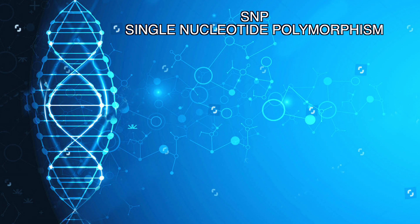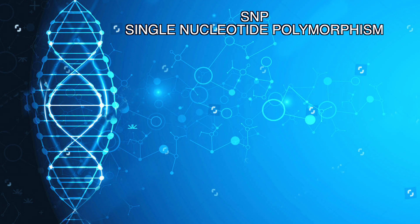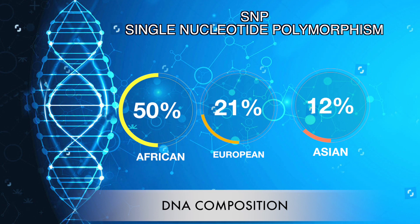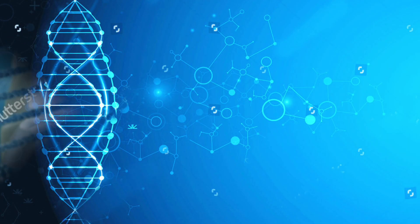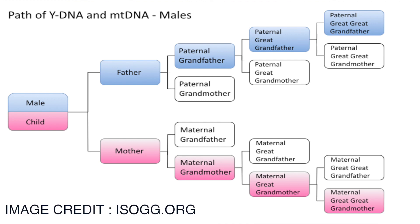Then we have Single Nucleotide Polymorphism (SNP) testing, used by companies like 23andMe to explain the composition of DNA. These tests evaluate a large number of SNP variations across a person's entire genome. The results are compared with others who have taken the test to provide an estimate of ethnic background — for example, approximately 50% African, 25% European, 20% Asian, and 5% unknown. Genealogists prefer SNP tests because Y chromosome and mitochondrial DNA tests represent only single ancestral lines and do not capture overall ethnic background.